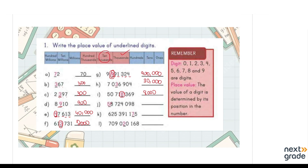Next, we have an 8-digit number where the 8th digit is underlined. Counting place values 1 through 8, the 8th place is 10,000,000, so we write 50,000,000 — remember a million has 6 zeros. Then we have a 9-digit number where the digit in the tens place is underlined, so we write 70. Finally, another 9-digit number where the underlined digit is at the 1,000 place, giving us 20,000. This is how you identify the place value of different digits, and we have practiced it too.